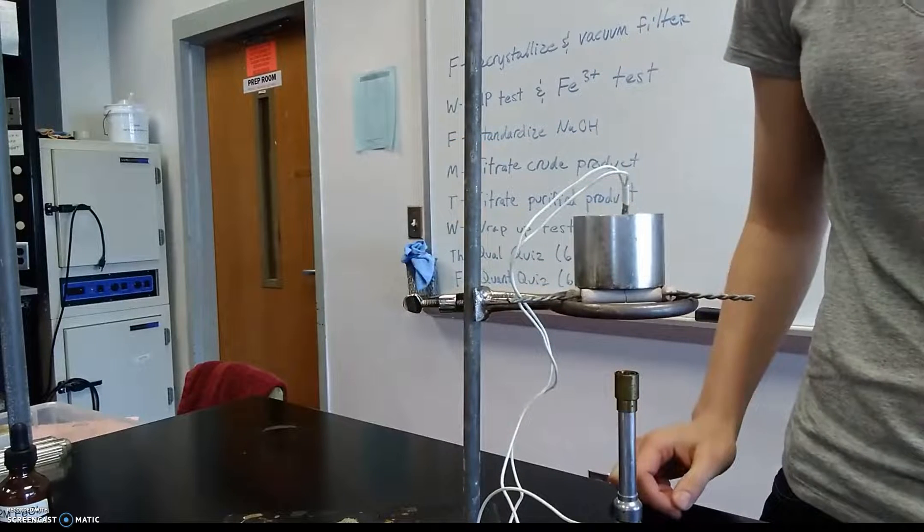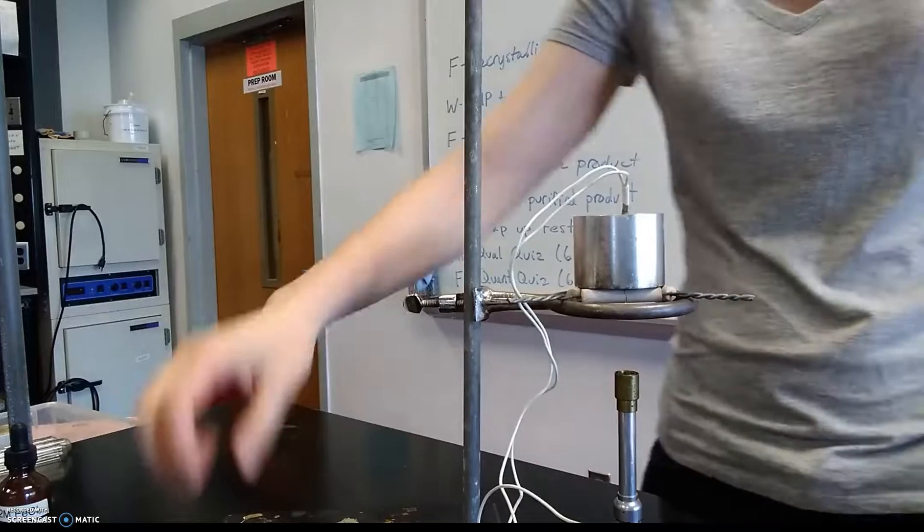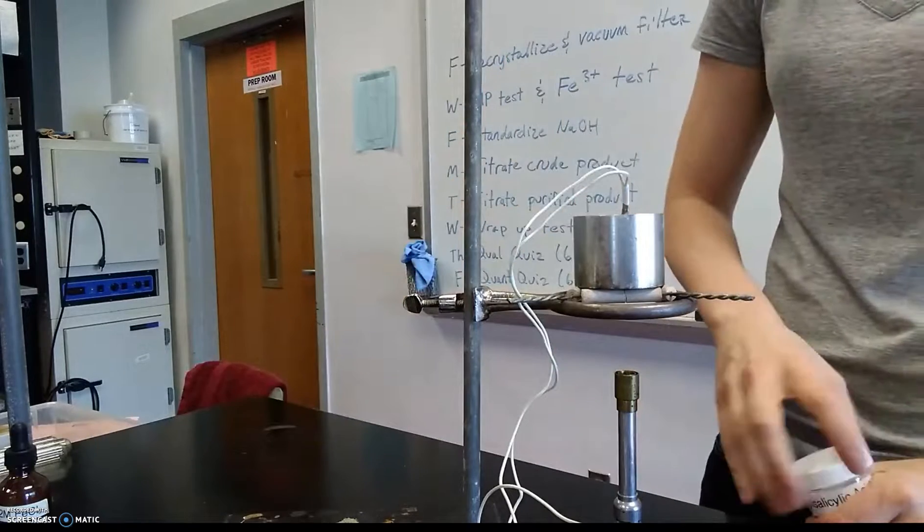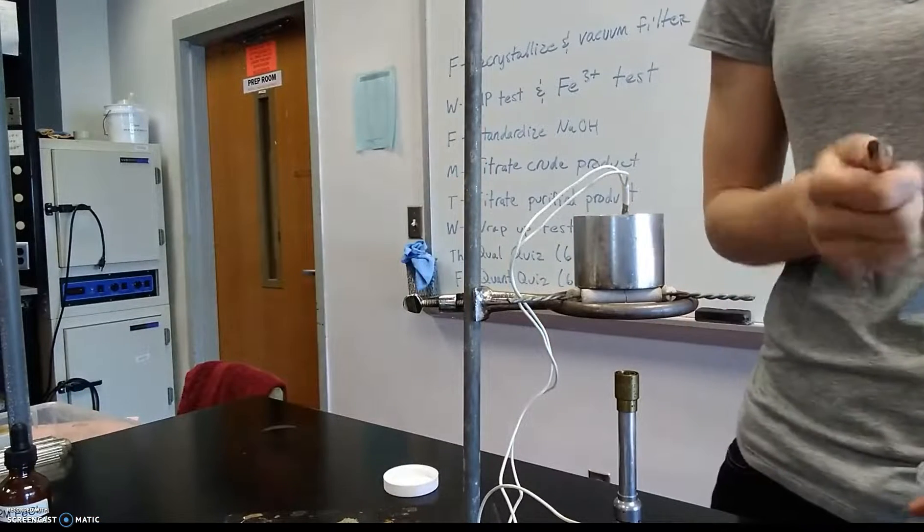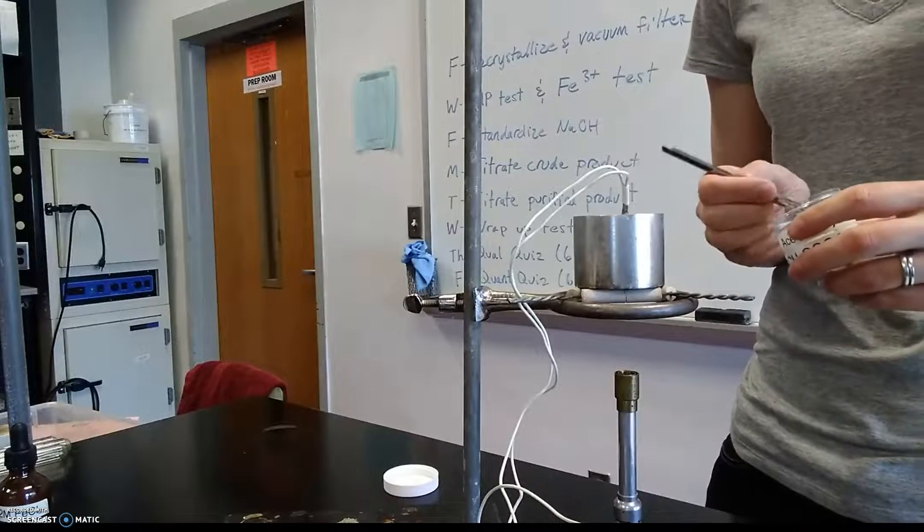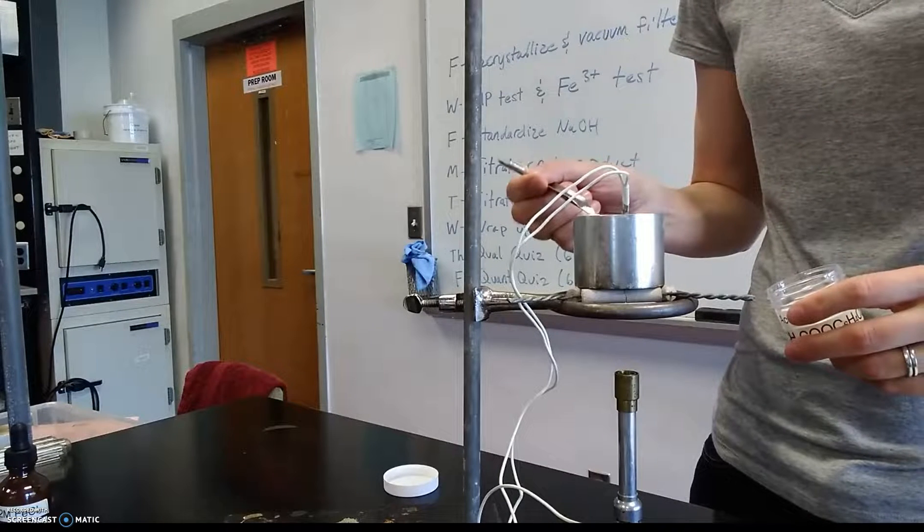Make sure that those wires are out of the way of the flame. Kind of tuck them off to the side somehow. Obviously if those catch on fire they're going to break the thermometer. Again we're going to be testing all three samples. Reagent grade which is what I'm using now. Same deal. Really small amount of sample. You don't need a lot of it.